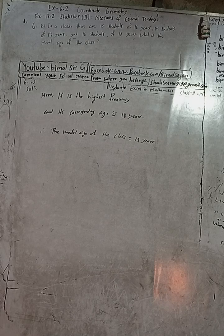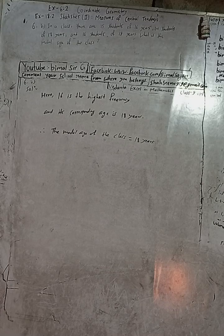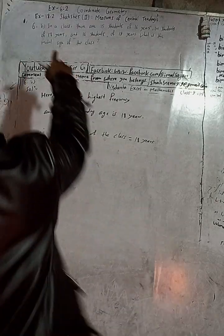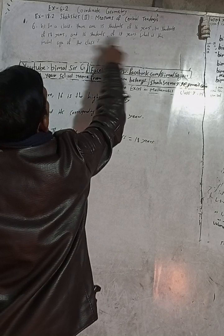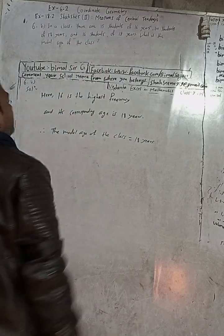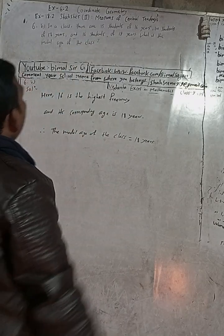There are 15 people of 16 years and there are 14 people of 17 years, and there are 16 people of 18 years. That means...